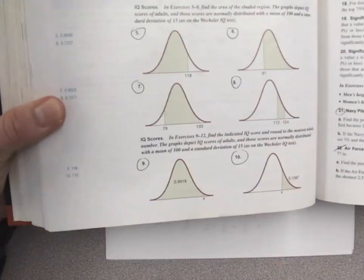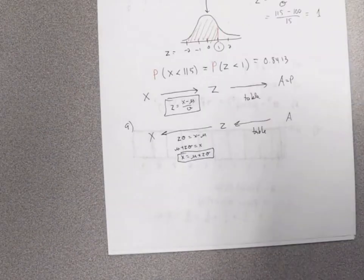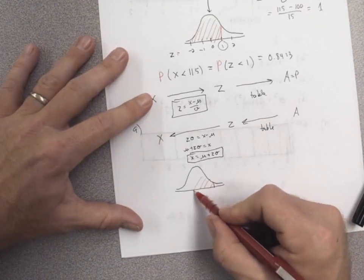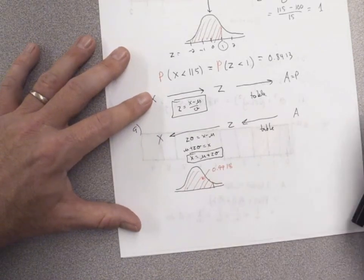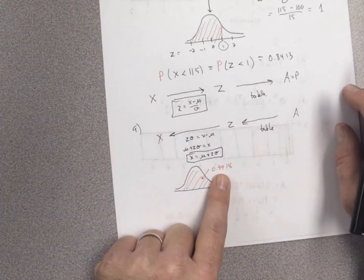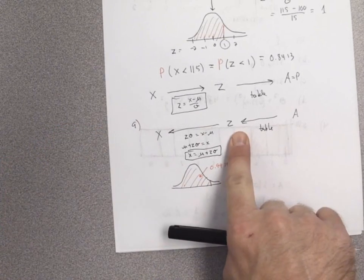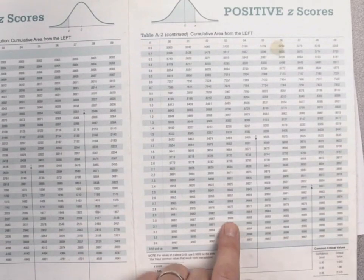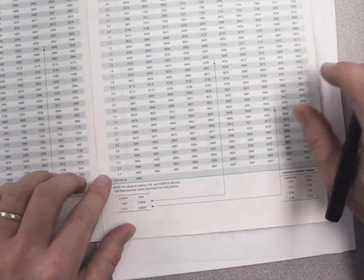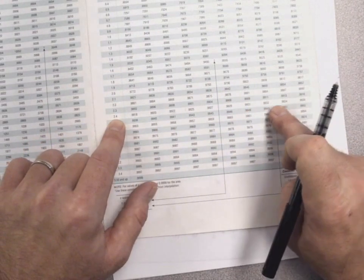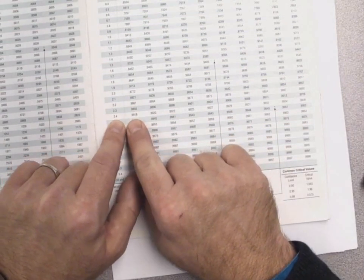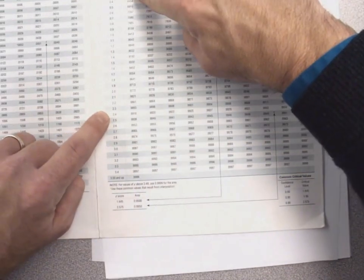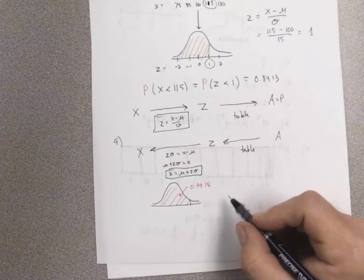Number 9 says there's an area of 0.9918 to the left. I need to take this area and turn it into a z score using the table. I'm looking for 0.9918 in the table — when they give those specific numbers it usually means there's an exact match. Tracking 0.9918 back gives a z score of 2.40.